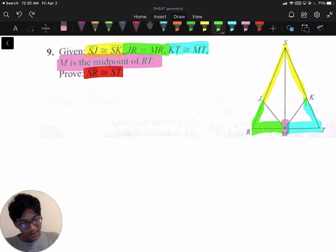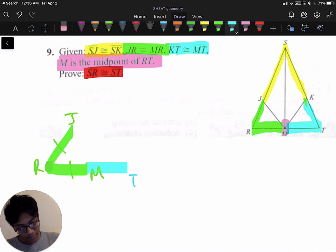We know that JR is congruent to RM. So JR and RM are congruent. So that means this and this are congruent. We also know that MT, which is what I just drew in blue, that's MT. At least it should look like MT, is congruent to TK. So that's TK right there.